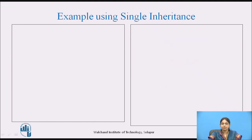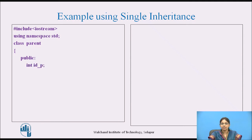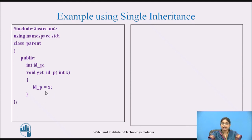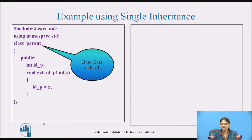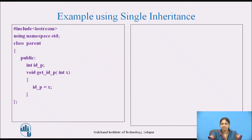Let us take an example using single inheritance. Here we have a class called 'parent'. Under public visibility label, it has an integer data member 'idp' and a member function 'get_idp' that takes a parameter x and assigns its value to idp. idp indicates the id of the parent. This is the base class.